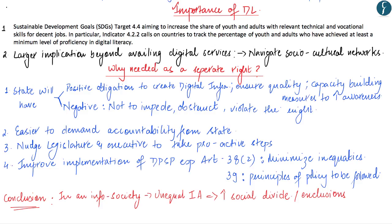Moving on to the importance of digital literacy: Sustainable Development Goal target 4.4 speaks about increasing the share of youth and adults with relevant technical and vocational skills for a decent job, where access to internet plays a very important role. Indicator 4.2 asks countries to track the percentage of youth and adults who have achieved at least a minimum level of proficiency in digital literacy. The mere fact that digital literacy is included as part of the Sustainable Development Goals speaks about its importance.